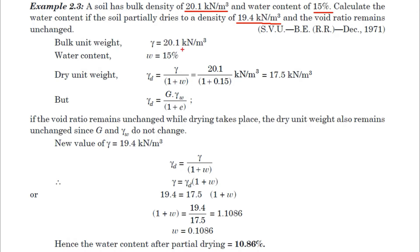The given value is bulk unit weight γ = 20.1 kN/m³ with a corresponding water content of 15%. We can calculate the dry unit weight using the formula: γd = γ / (1 + w). Substituting, γd = 20.1 / (1 + 0.15), which gives us γd = 17.5 kN/m³.